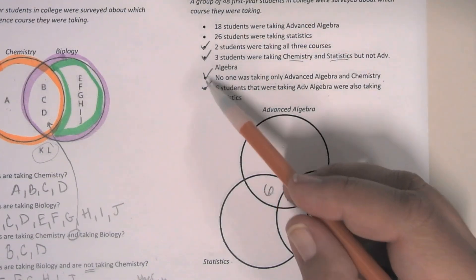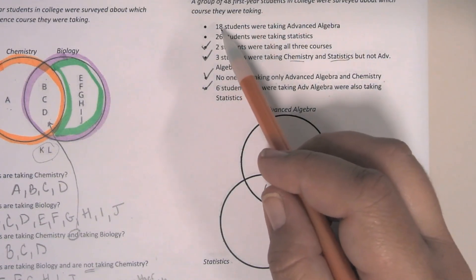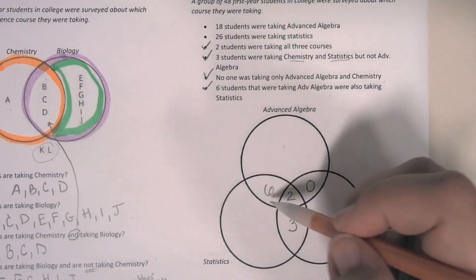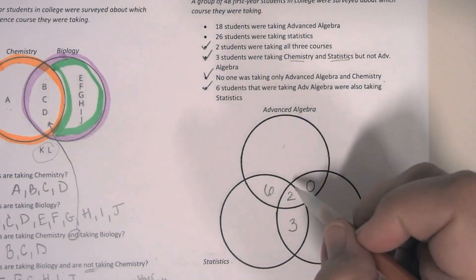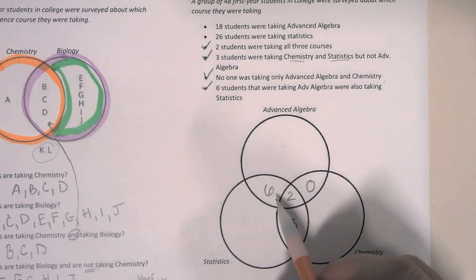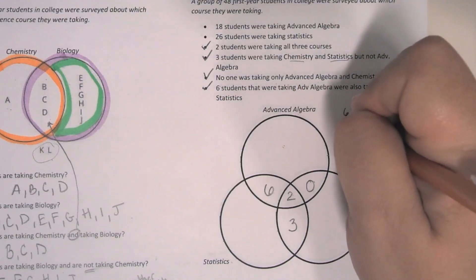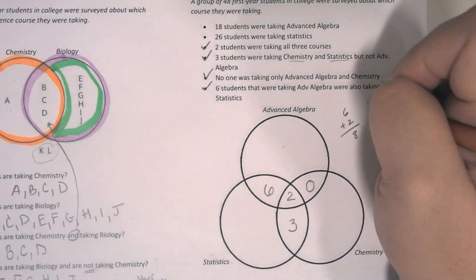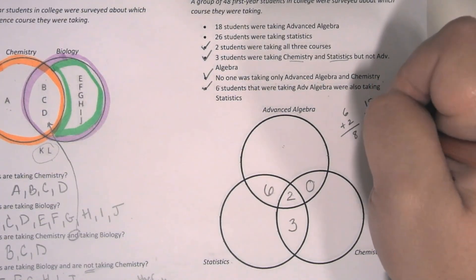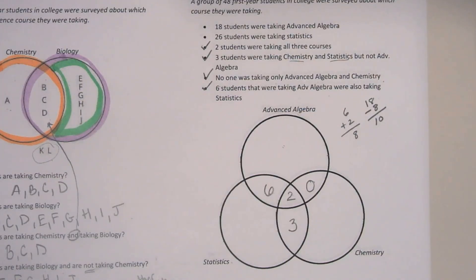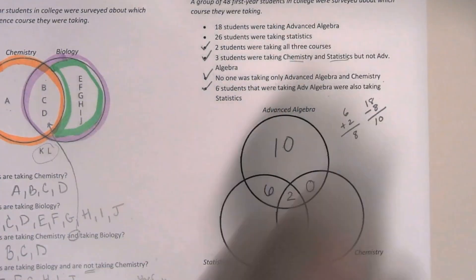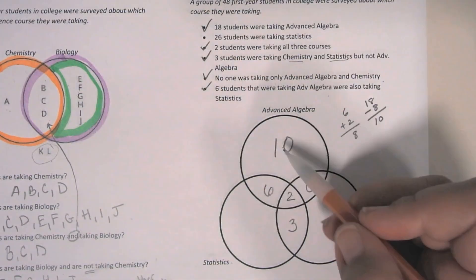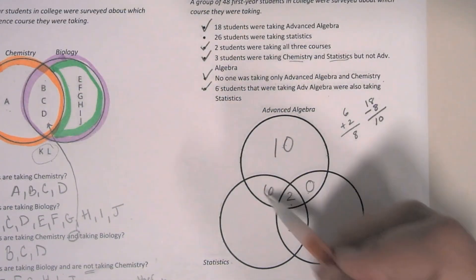Now that we've used all of that information, if I know 18 students were taking advanced algebra, this circle should total up to 18. But right now I'm representing eight students between these two sections — six plus two is eight. If the total is supposed to be 18, I take eight away from 18, and I know there are 10 students left. Those 10 students must be taking just advanced algebra, because 10 plus 6 plus 2 plus 0 equals 18.